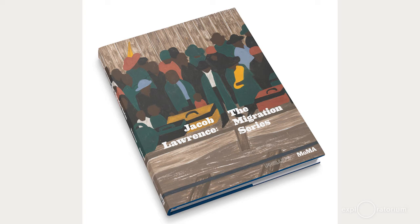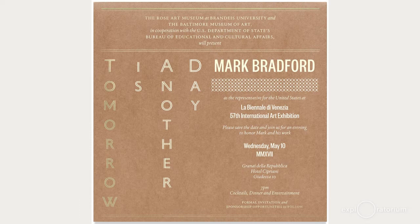Silas Monroe engages in practices that inspire people to elevate themselves and improve society. His design studio, Polymode, has designed identities and publications for exhibitions of Jacob Lawrence at MoMA and Mark Bradford at the Venice Biennale. His writing has appeared in Slanted, The Walker Reader, and the book W.E.B. Du Bois' Data Portraits: Visualizing Black America.